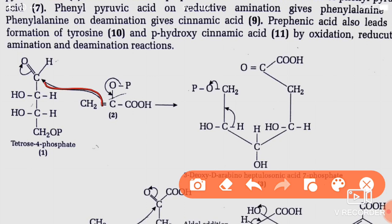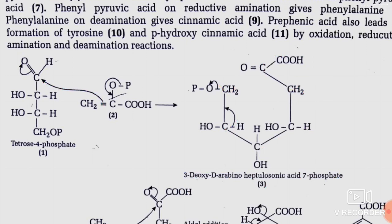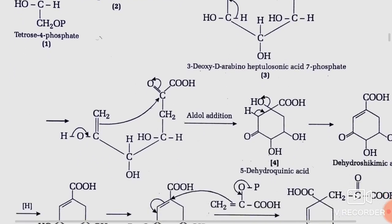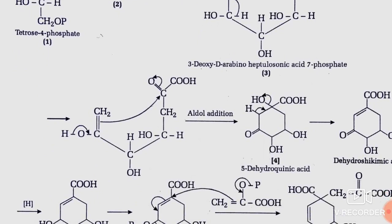The tetrose and the pyruvate form a 7-membered carbon sugar ring. Here you see that the carbons 1, 2, 3, 4, 5, 6, and 7 form a 7-member ring. That is called 3-deoxy-D-arabino-heptulonic acid 7-phosphate, also known as DAHP. Further, the cyclization process starts with an intramolecular aldol condensation.